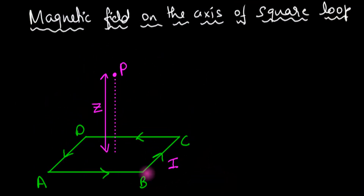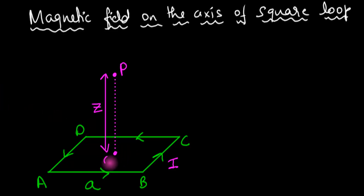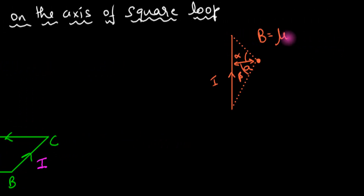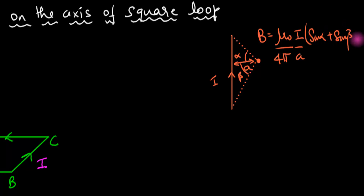So here's the setup. We have a square loop with side length 'a'. We need to calculate the magnetic field at a point P on the axis, where this line passes through the center O. We're going to use the same formula as before — the magnetic field due to a finite wire segment — which is: B = (μ₀/4π) × (I/a) × (sin α + sin β).